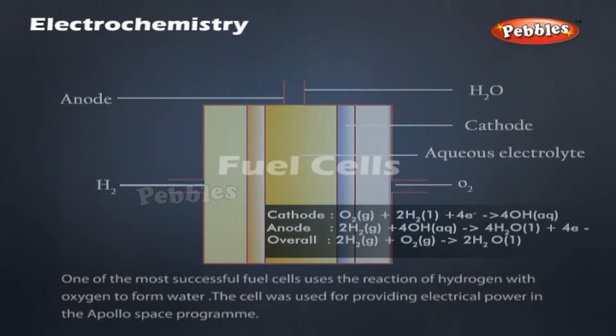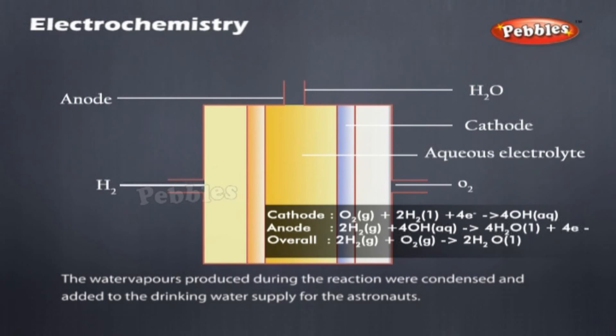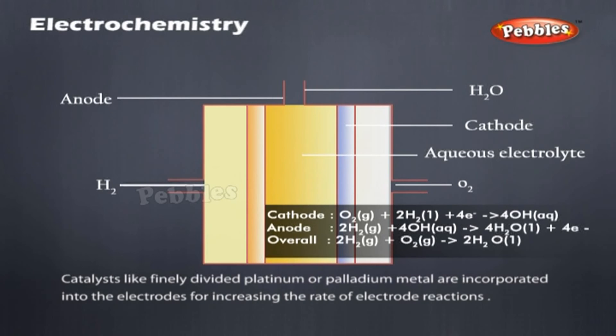Fuel cells. One of the most successful fuel cells uses the reaction of hydrogen with oxygen to form water. The cell was used for providing electrical power in the Apollo space program. The water vapors produced during the reaction were condensed and added to the drinking water supply for the astronauts. In the cell, hydrogen and oxygen are bubbled through porous carbon electrodes into concentrated aqueous sodium hydroxide solution. Catalysts like finely divided platinum or palladium metal are incorporated into the electrodes for increasing the rate of electrode reactions.